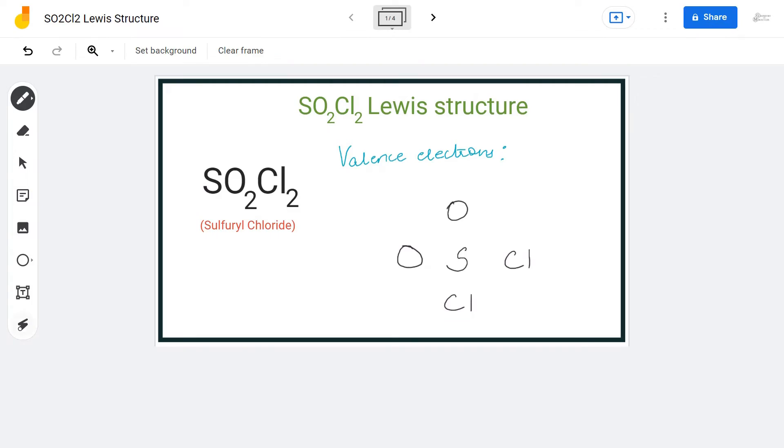Hi guys, welcome back to our channel. In today's video we are going to help you with SO2Cl2 Lewis structure. It is a chemical formula for sulfuryl chloride, and to determine its Lewis structure we will first find out the total number of valence electrons.